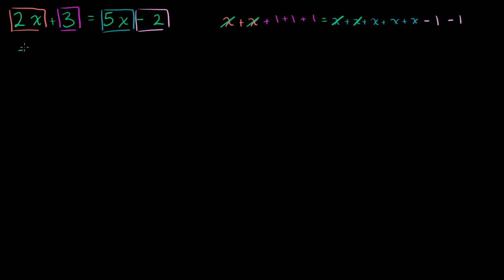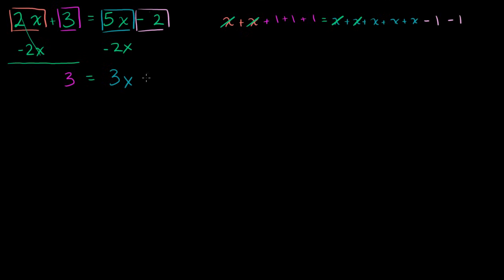So we're subtracting 2x from the left and also from the right. On the left-hand side, 2x plus 3 minus 2x — the 2x's cancel out, and you're just left with 3. On the right-hand side, 5x minus 2x leaves us with 3x. And then we still have the minus 2 there. So we now have 3 is equal to 3x minus 2.